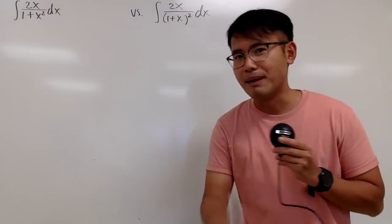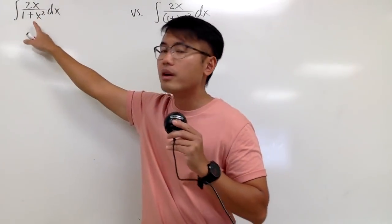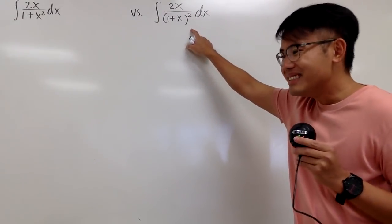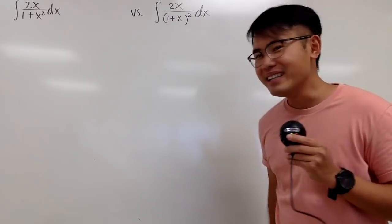Okay, we have two integrals on the board. The first one is the integral of 2x over 1 plus x squared dx. And for the second one, this is really similar to the first one, right?